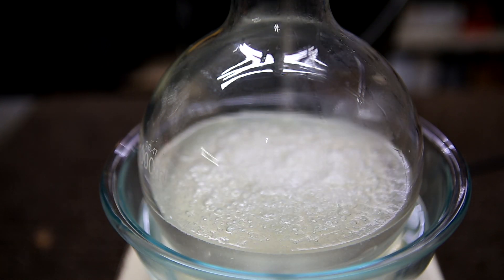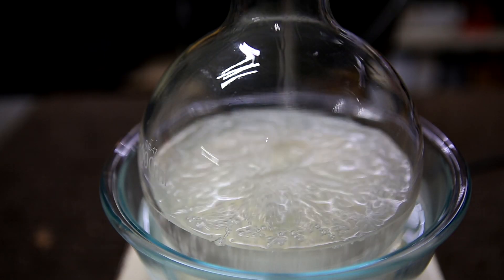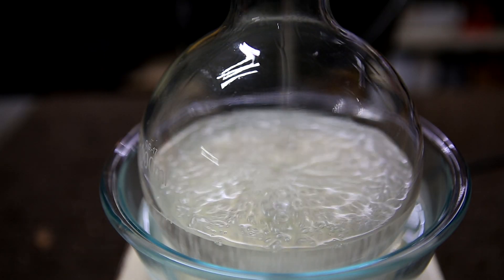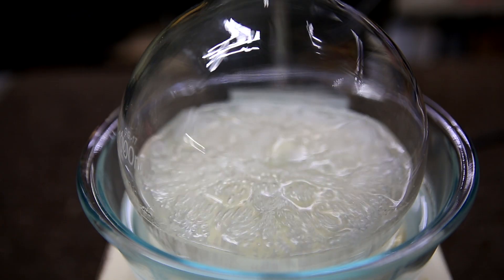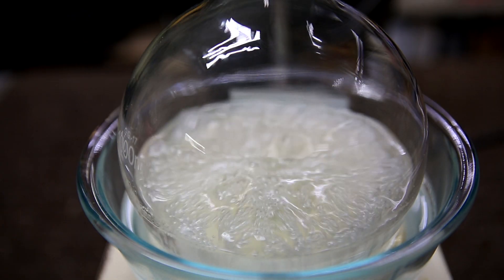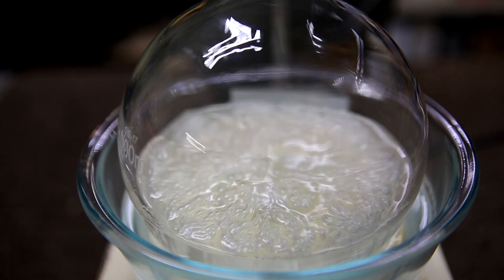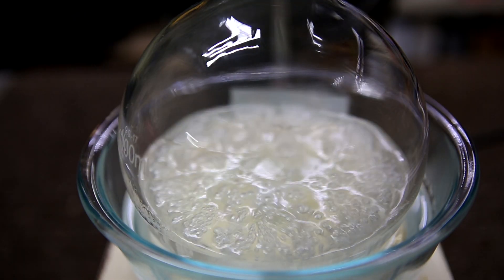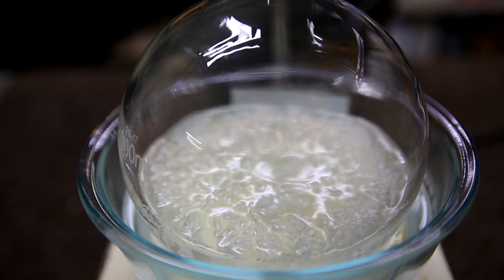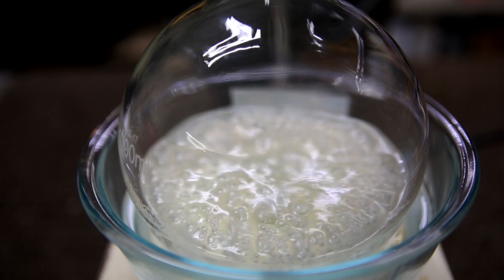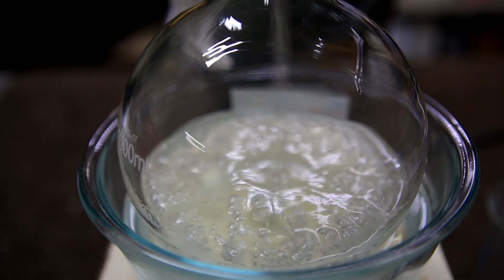Methylene chloride boils at 39.6 degrees Celsius, so it's going to be the first fraction that comes off. It is important to note that methylene chloride and methanol form an azeotrope at around 93% DCM and 7% methanol. In my mixture, the second lowest boiling point fraction that would come off is methanol which boils at around 60 degrees Celsius.